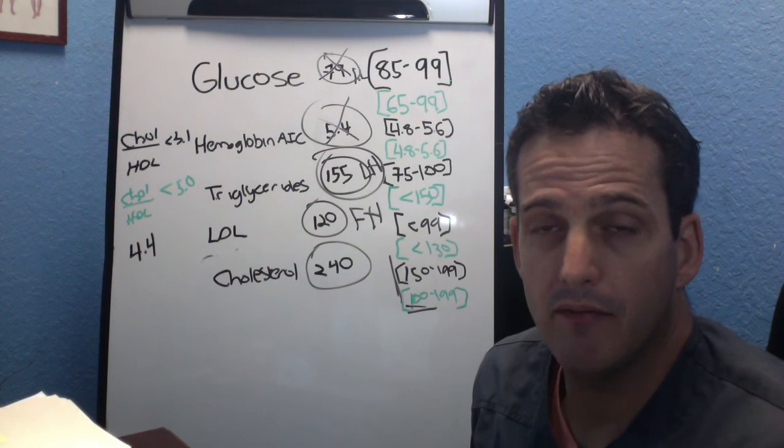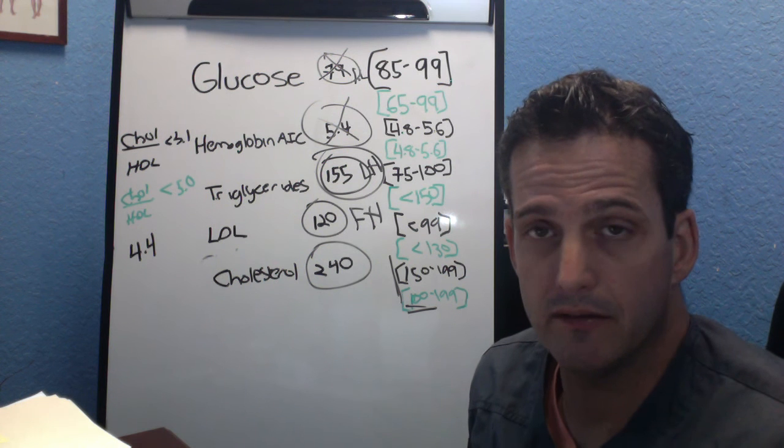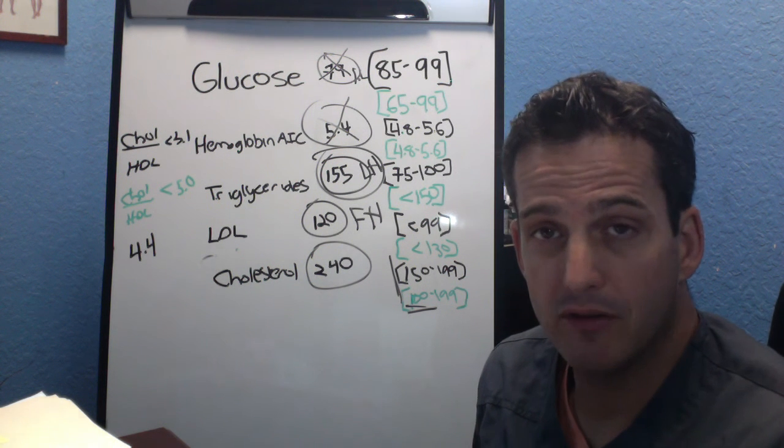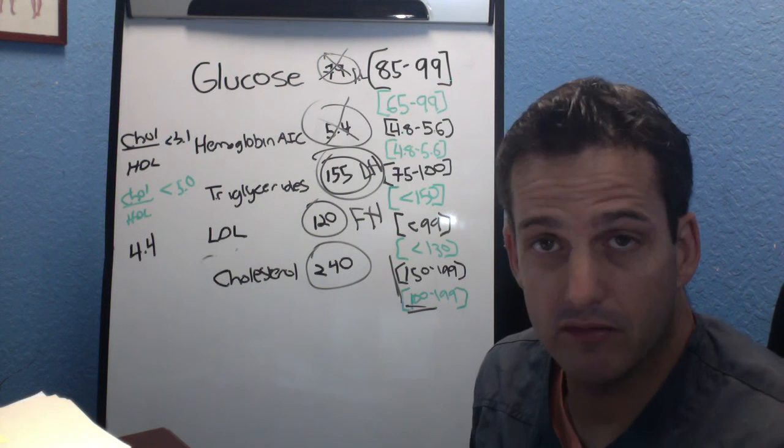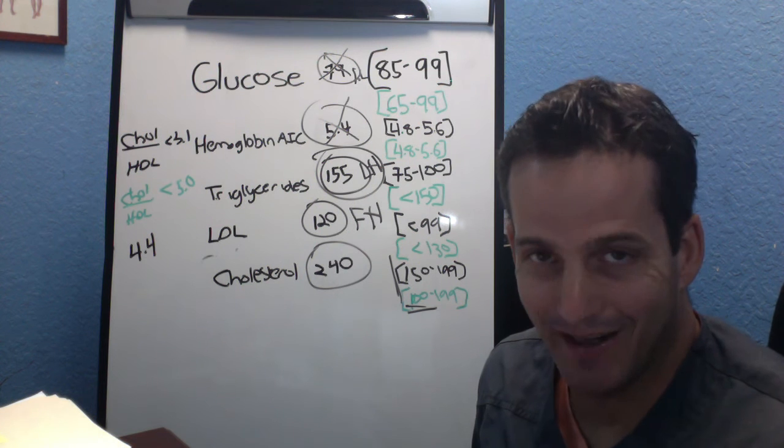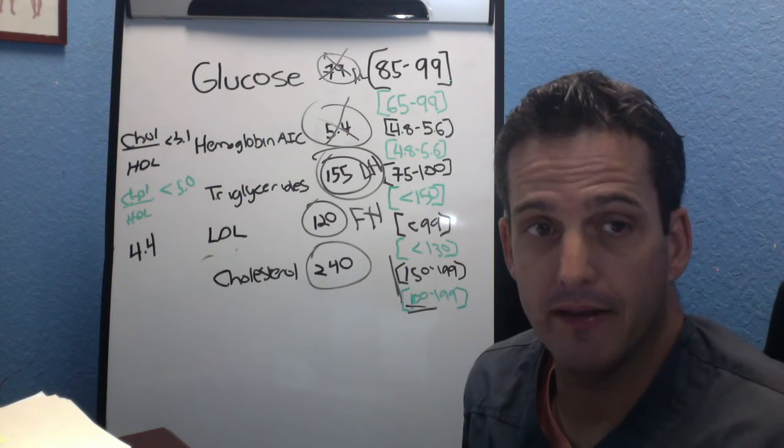What happens is when we have a glucose problem or insulin problem, insulin is not doing a good job of getting sugar out of the bloodstream. So what happens to that sugar is it needs to go somewhere and it's converted into triglycerides, cholesterol, LDL. So that's a good indication that that person could potentially have an insulin problem.